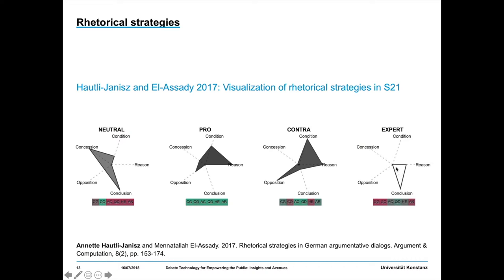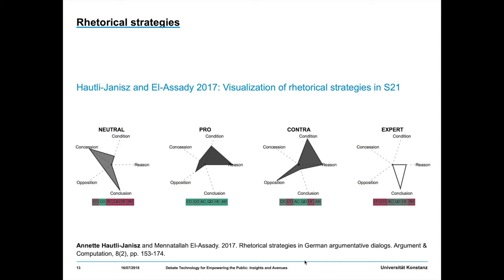If you look at the experts, they exhibit a very different pattern — a lot of premise, reason, and conclusion giving, which is obvious given their role in arguing for certain positions and giving reasons for them. The neutral mediator, Heinrich Geisler, behaved again differently — he used many concessions, tried to bring people together to form a coherent picture, with not a lot of opposition but many drawn conclusions. The glyphs are a way of aggregating a lot of information in one single visual representation, allowing us to identify differences in patterns at a first glance.